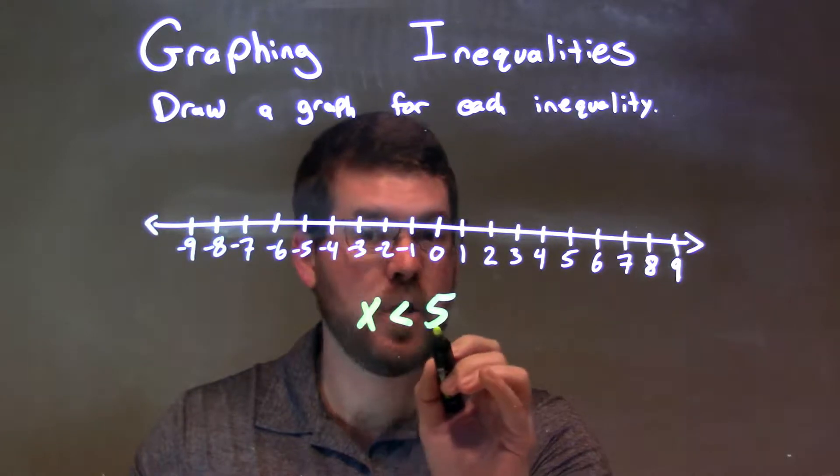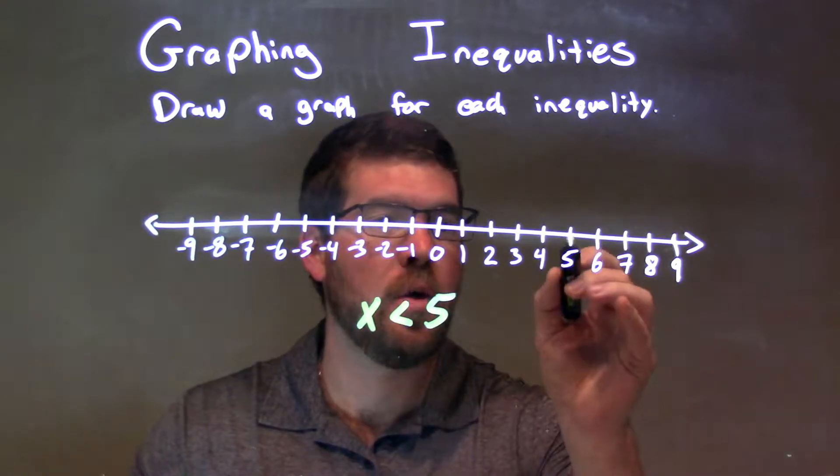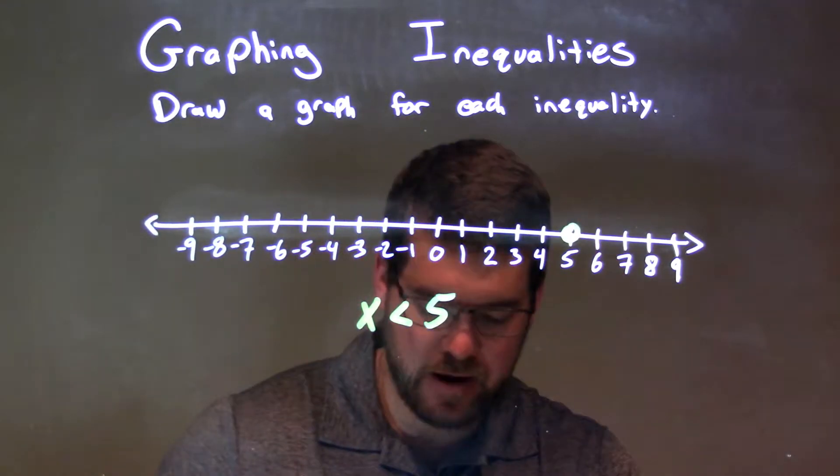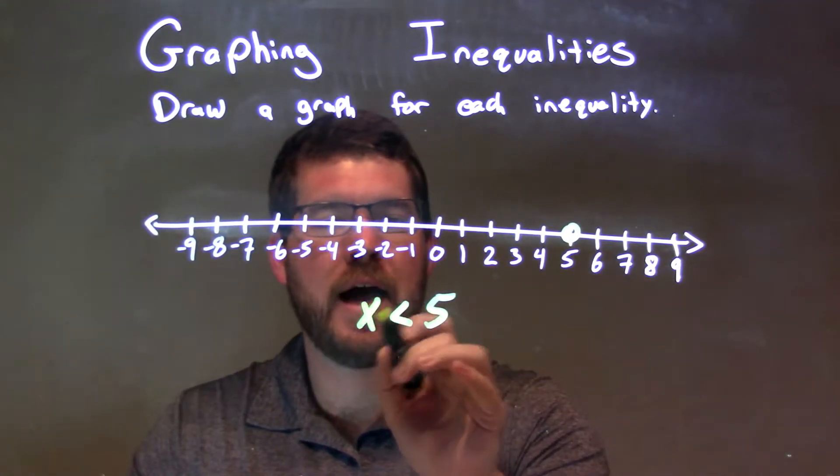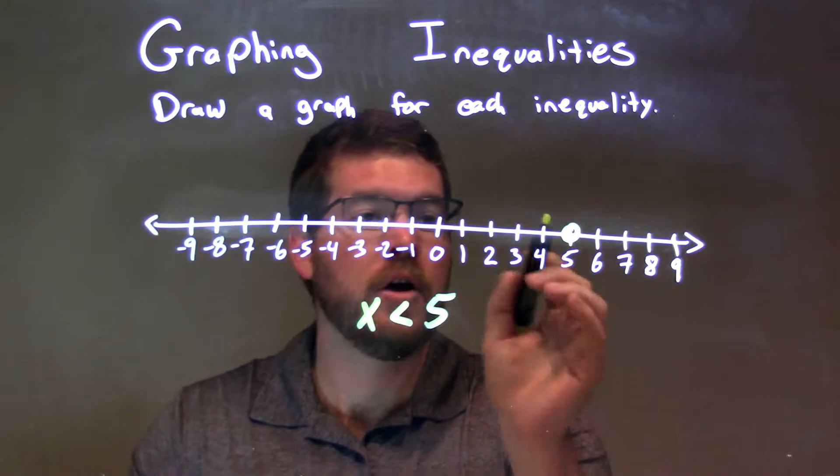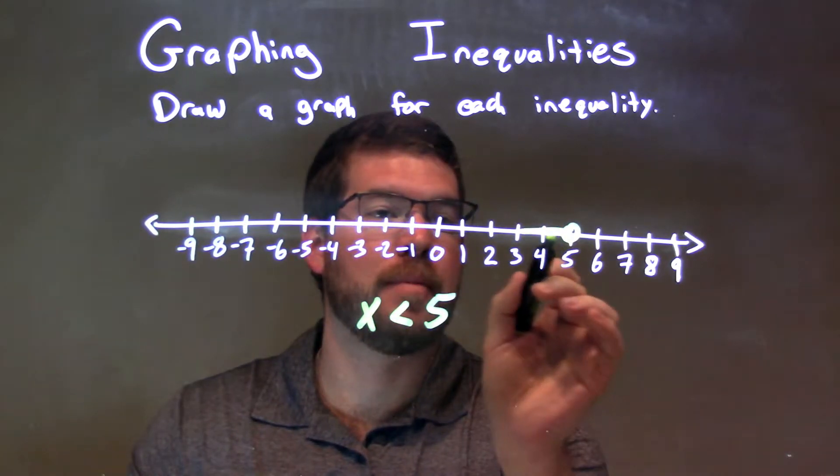And then since x cannot equal 5, it's just less than, we have an open circle at 5. Now we say x is less than 5, so we shade to the left from that 5.